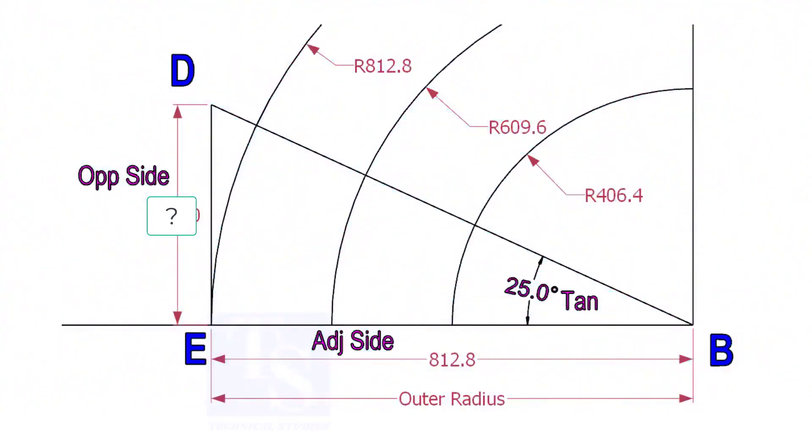Mark a line 25-degree rotated from the base line AB. To draw the line DB, we need to know the length of the line ED.